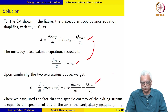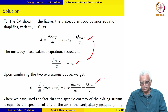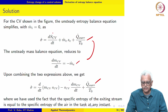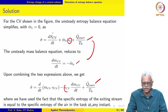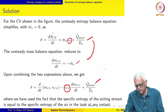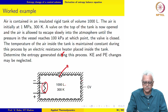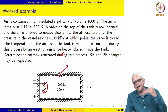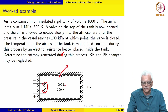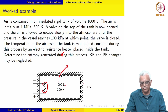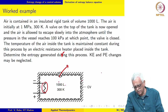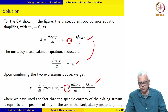Combining these two equations gives an expression for entropy generation. We replace sₑ with s_cv, noting that the entropy of the stream as it leaves the control volume is the same as the specific entropy of the fluid within the control volume.